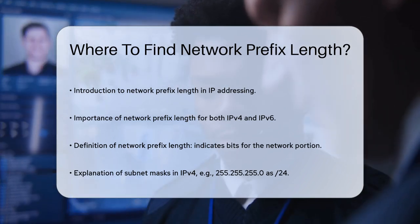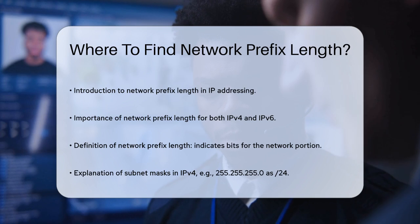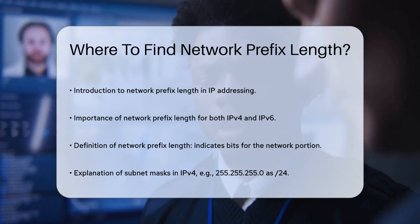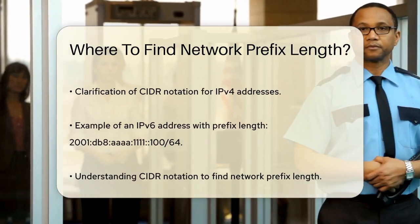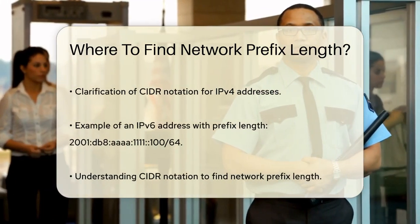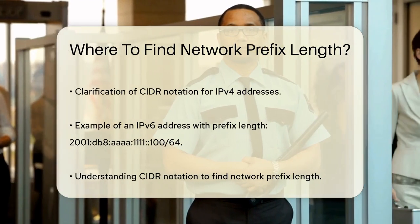For example, the subnet mask 255.255.255.0 can also be written in CIDR notation as /24. This /24 indicates that the first 24 bits of the IP address are used for the network portion.